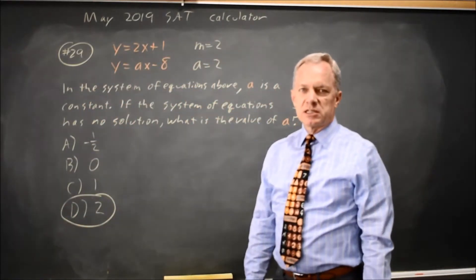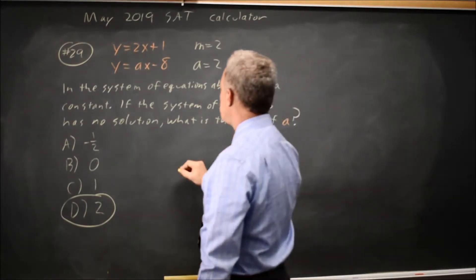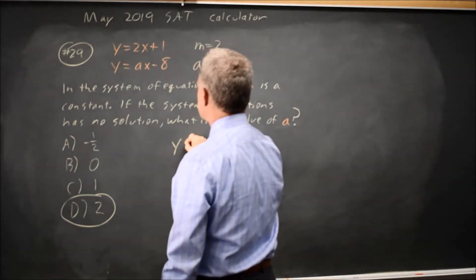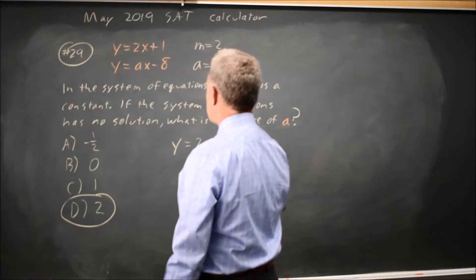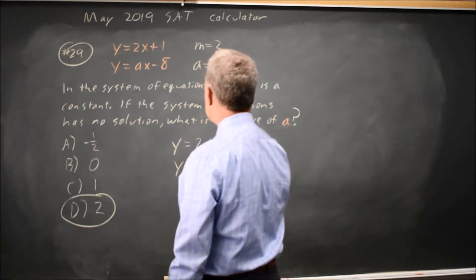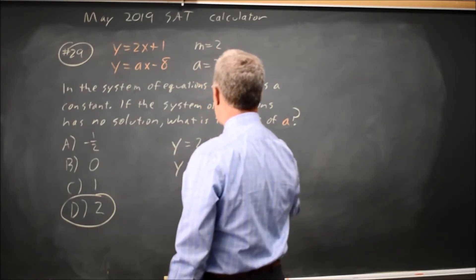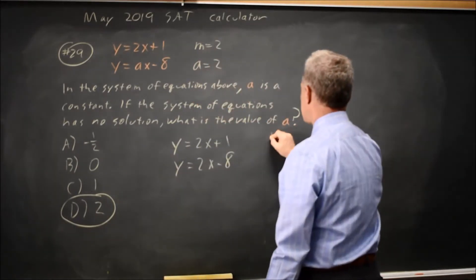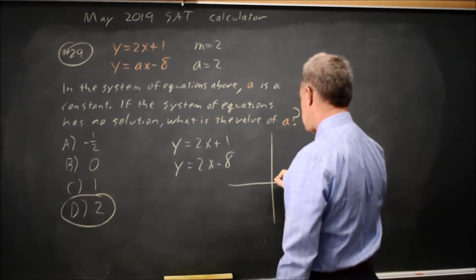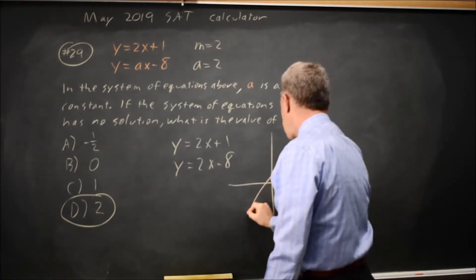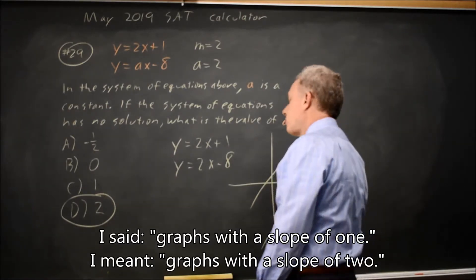If you want to check this, since this is a calculator question, you can put the first equation into y1, the second equation into y2 with a equals 2, and you'll see that the graphs are lines with a slope of 2 that are parallel.